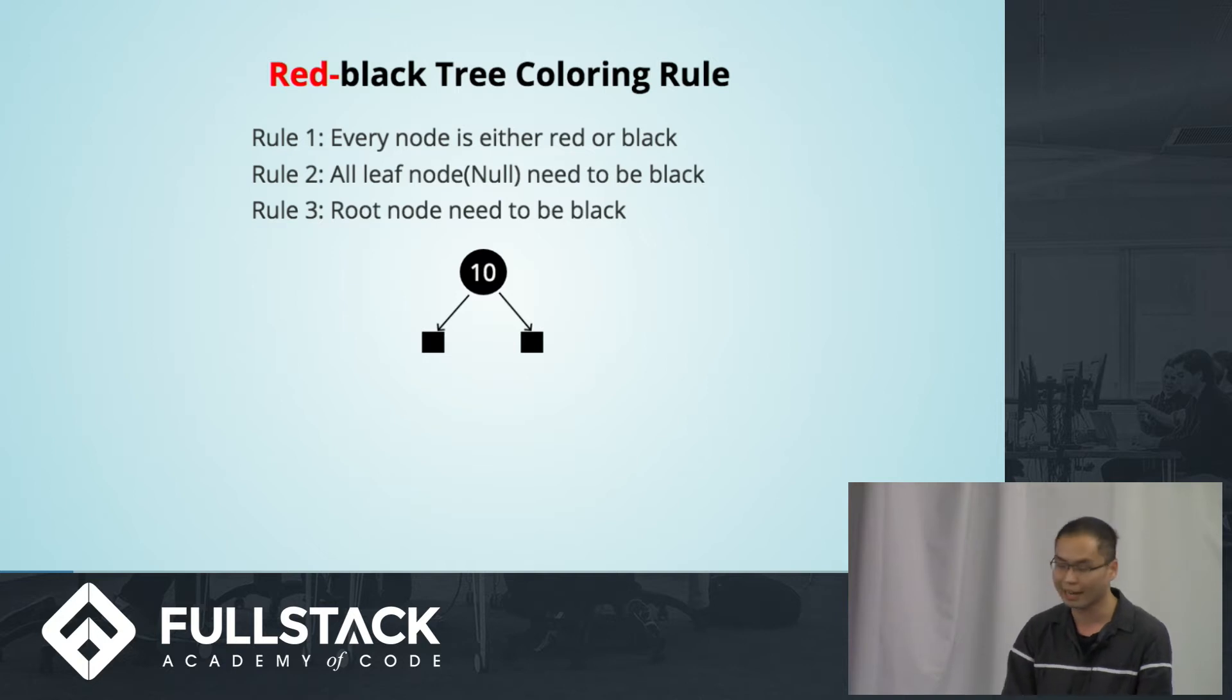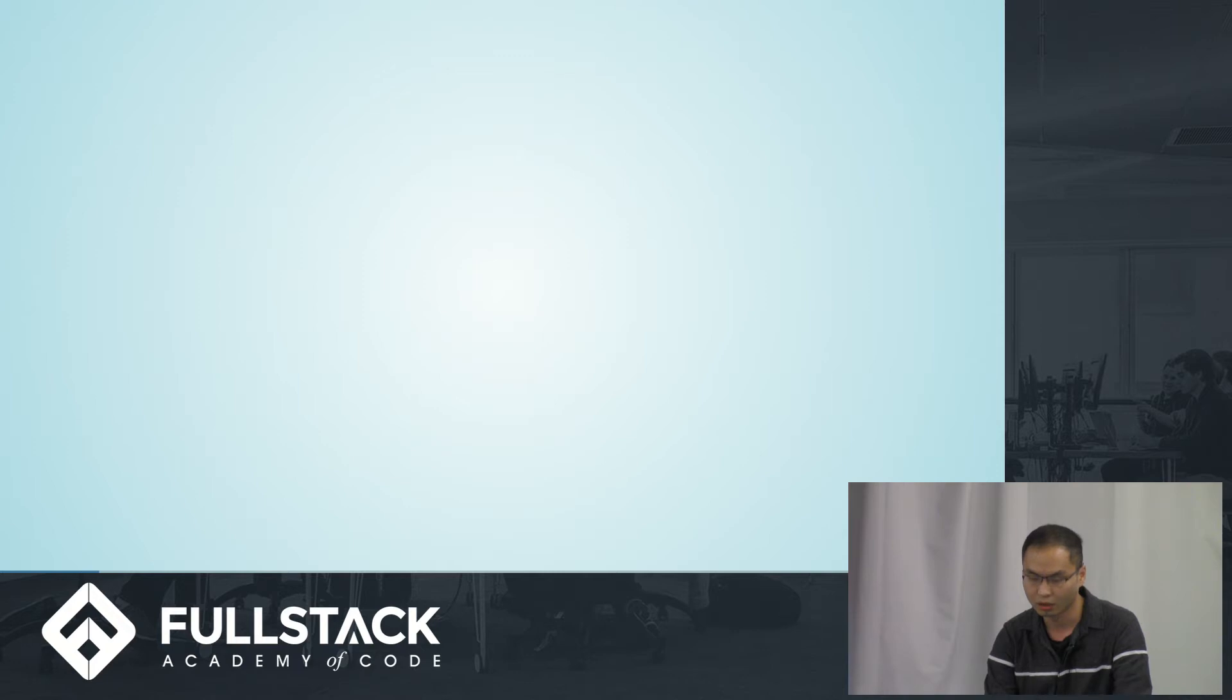I'm going to introduce what kind of coloring rule for red-black trees. Rule 1: every node is either red or black. This is obvious. And all the leaf nodes need to be black, right here. And root nodes need to be black. So if you have only one node in your red-black tree, it's always to be black. Always start with black.